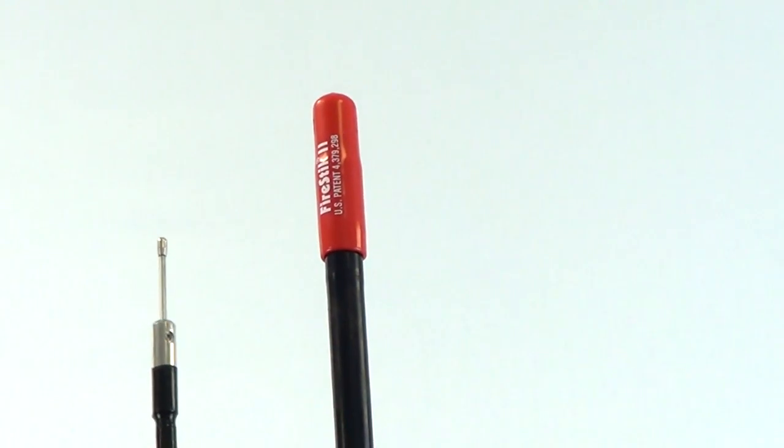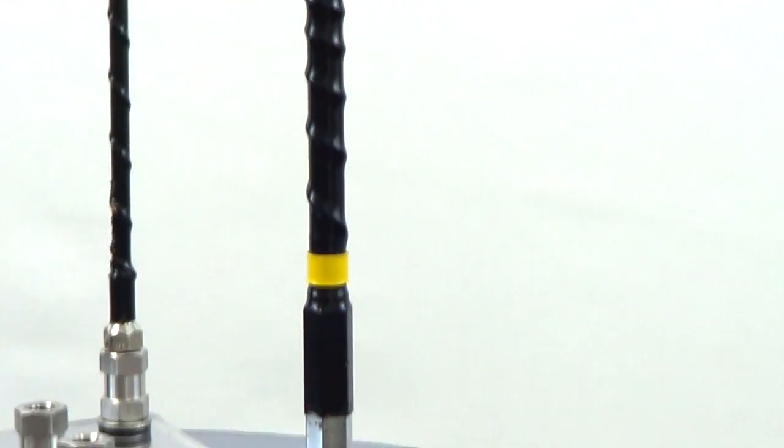Now, onto the fire stick antenna. And again, fiberglass, copper wound. That yellow band right there just means that this is a no ground plane antenna, which is also covered in our articles.